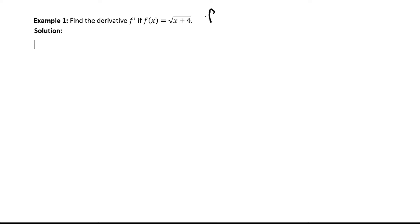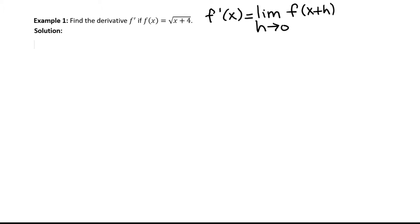The formula for the derivative function — that's f prime of x — is equal to the limit as h approaches 0 of f of x plus h minus f of x, all divided by h. The only difference is where we had 'a' previously, we now have x.